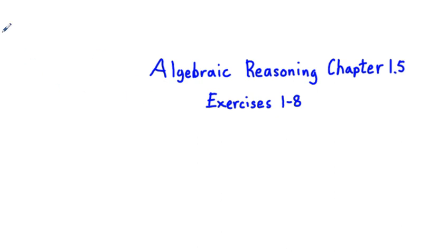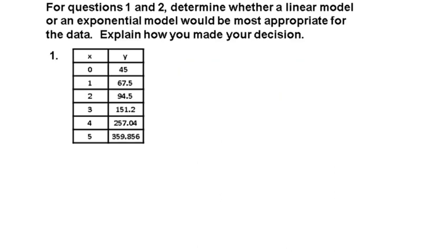Algebraic Reasoning, Chapter 1.5, Exercises 1-8. I'm going to go over the odd number problems 1, 3, 5, and 7 from this set. For questions 1 and 2, determine whether a linear model or an exponential model would be most appropriate for the data and explain how you made your decision.